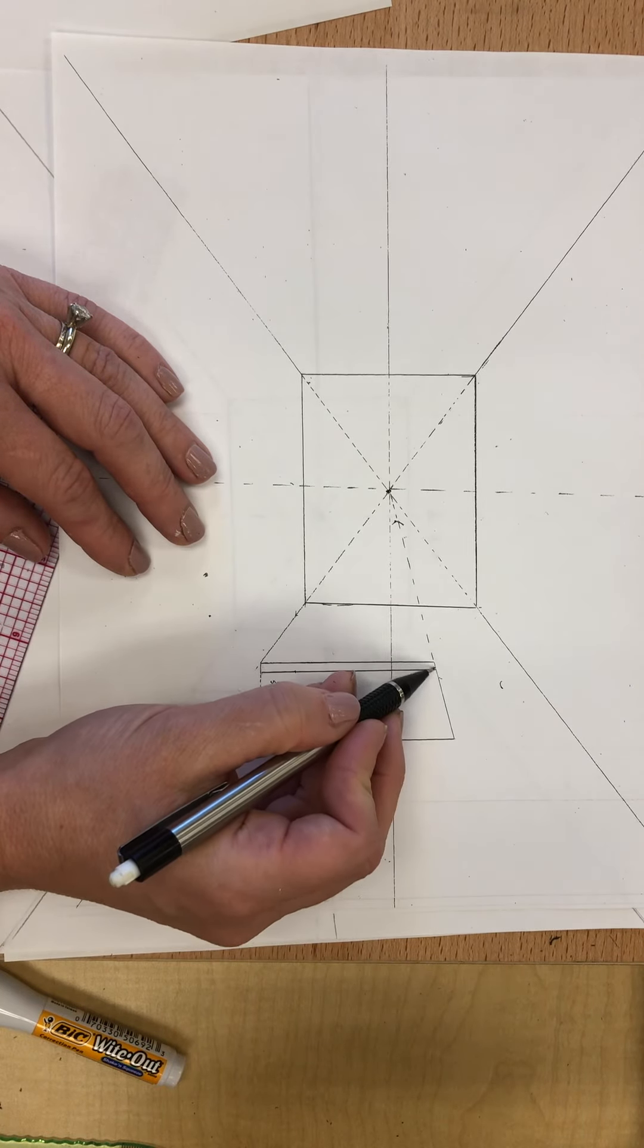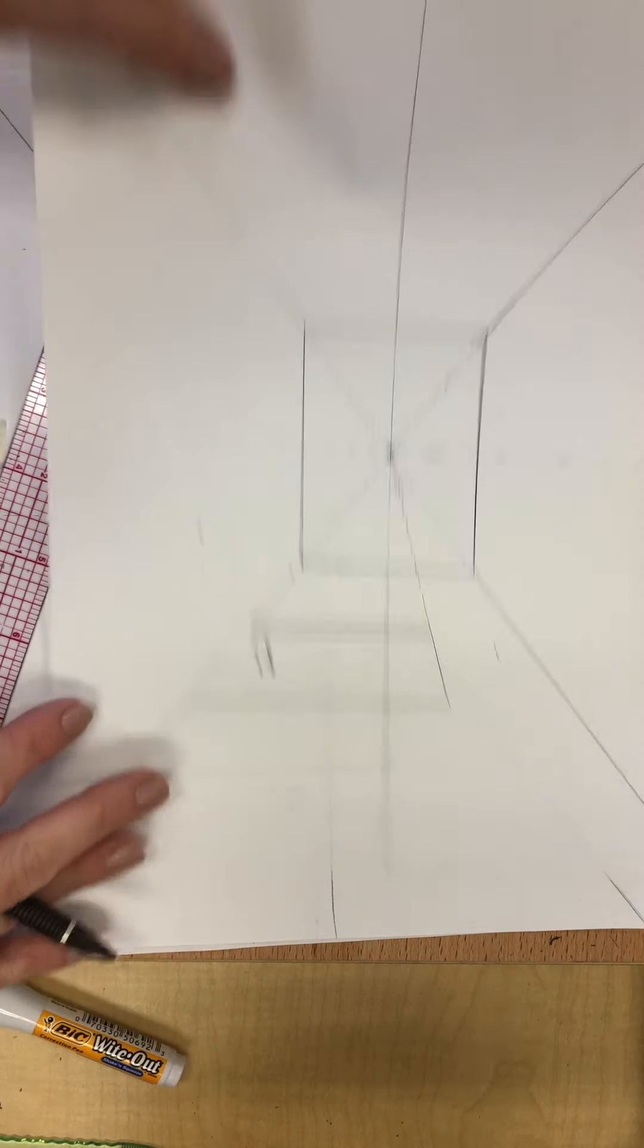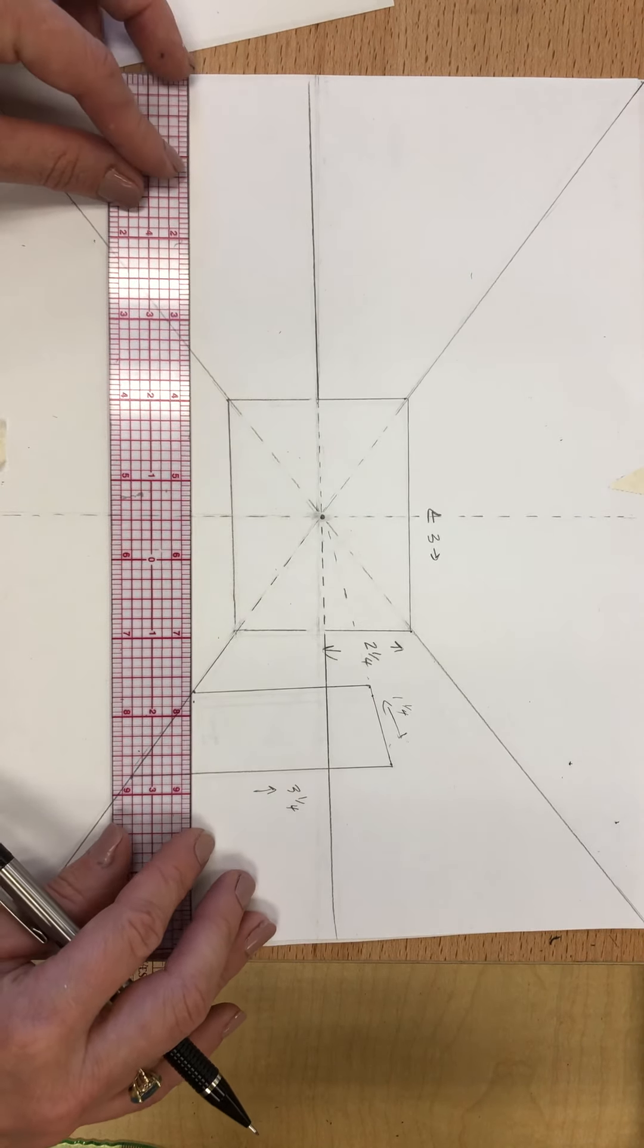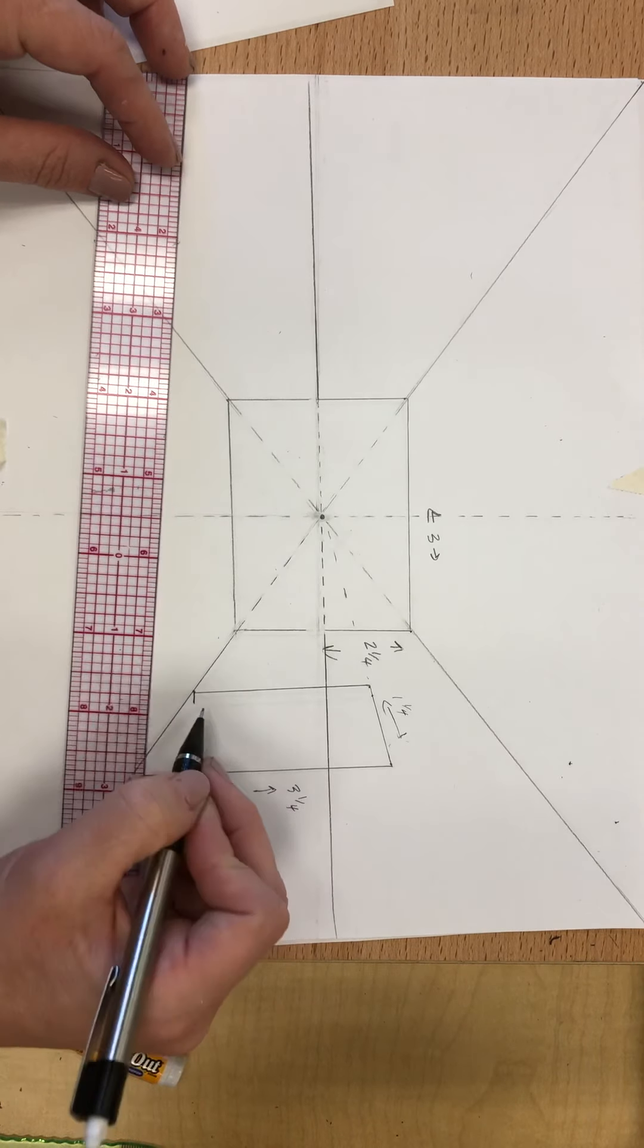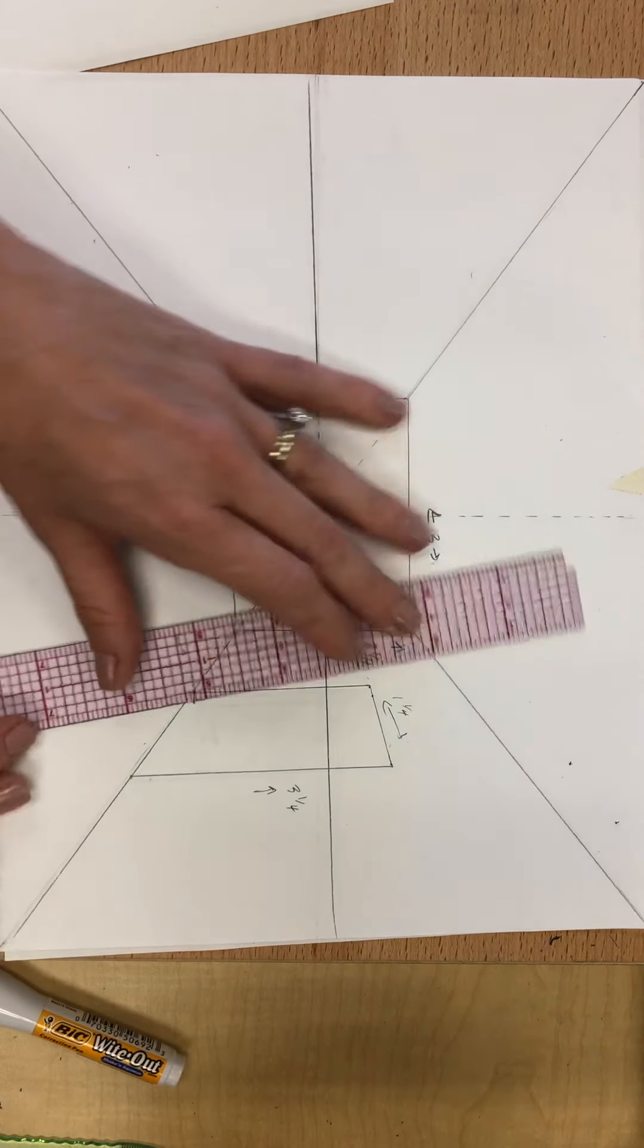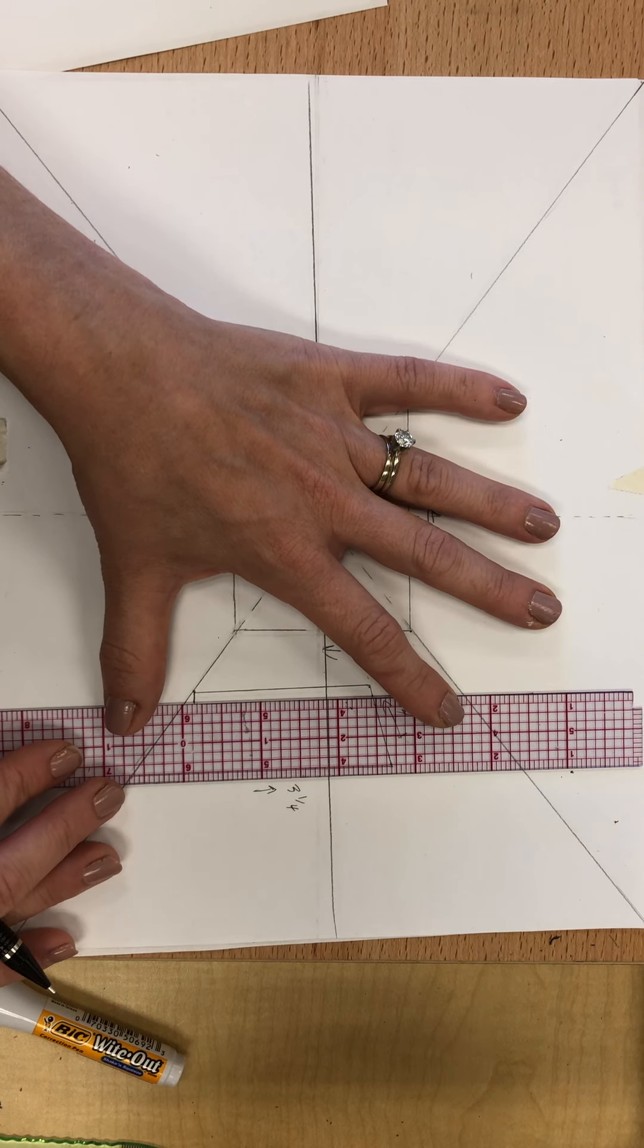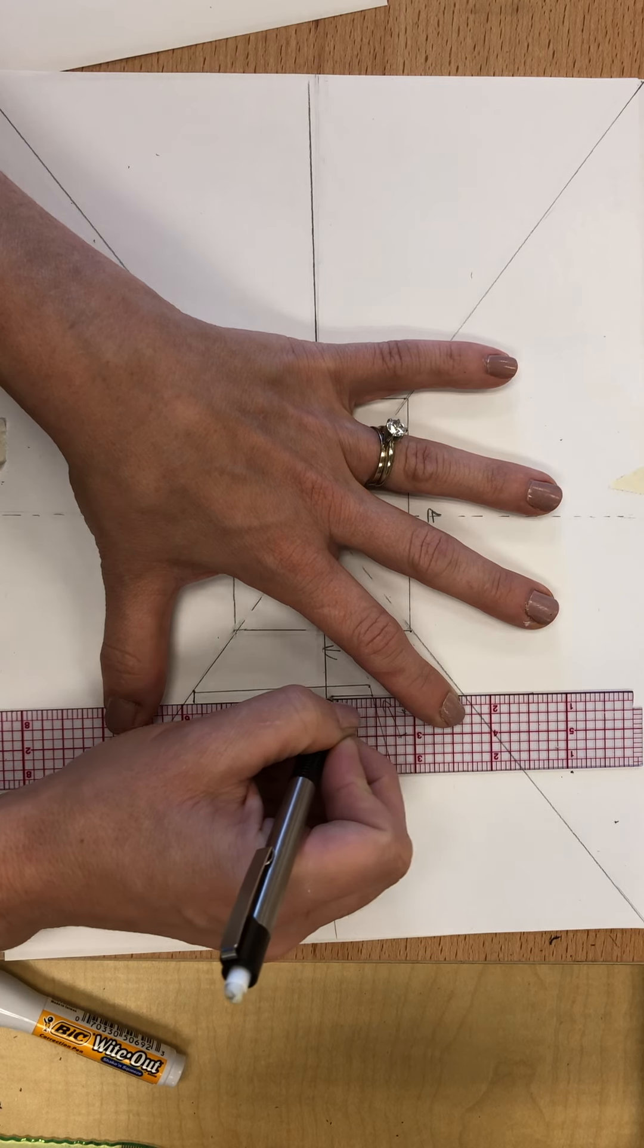Now the top of this is actually going to your vanishing point, so don't get confused. The thickness of your door is not that thick, it's a couple of little tick marks on your ruler thick, just to give enough information that you got a little frame going on right there.